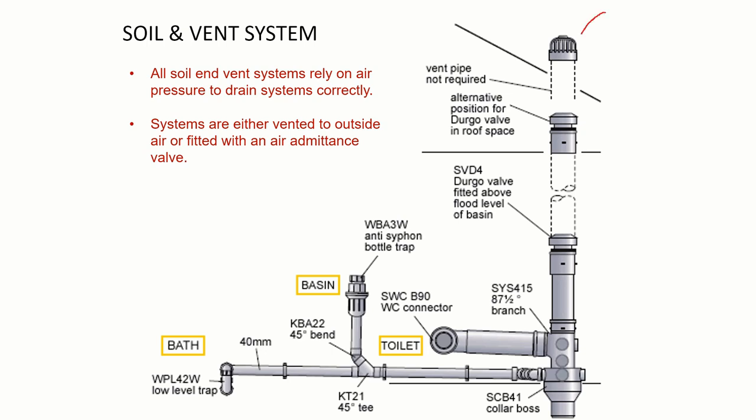All soil and vent systems rely on air pressure to drain the systems correctly. If we didn't have air entering into the top there, we would get a form of siphon. If you imagine getting a drinking straw and putting it into water, if you put your thumb over the top of it and lift it up, there's no air pressure in the top to push the liquid out. As soon as you release your thumb, air can rush in, equalise the pressure and the water would fall out.